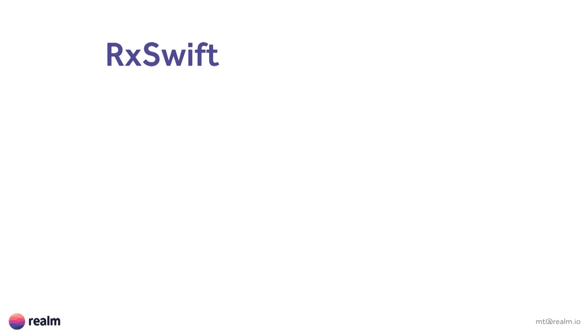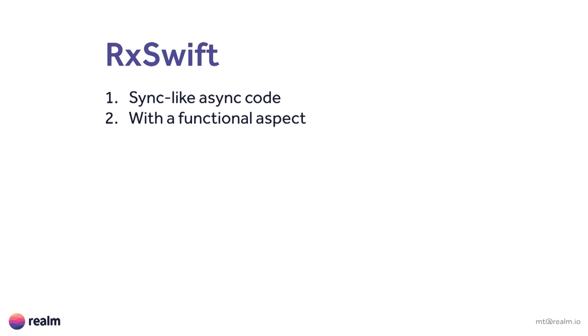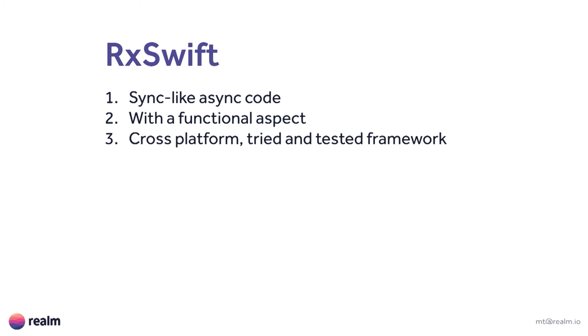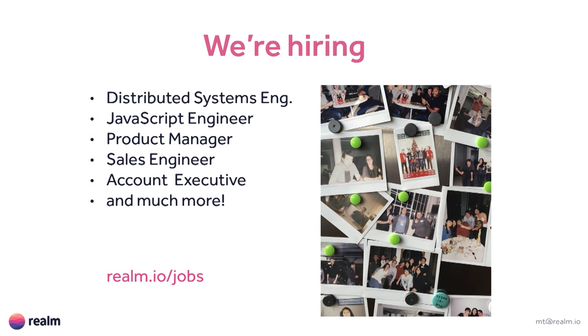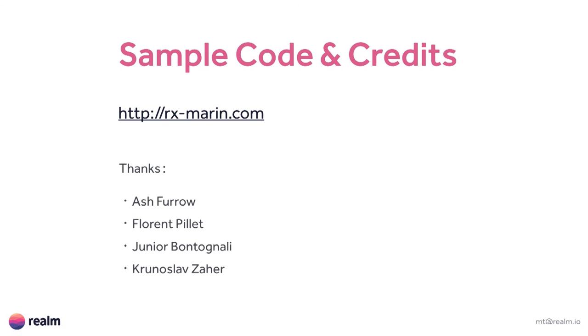So, RxSwift — what is it? It's synchronous-like asynchronous code. It has a functional aspect to it: processing, filtering, and more. It's also cross-platform and a tried and tested framework — there is Python, JavaScript, Kotlin, and all kinds of versions of it. If you want to talk about Realm or Rx or anything at all, just come find me. The sample code I showed is on my blog, rxmarion.com — there's a Swift post and you can clone the repo and try them yourselves. Thank you very much for having me today.